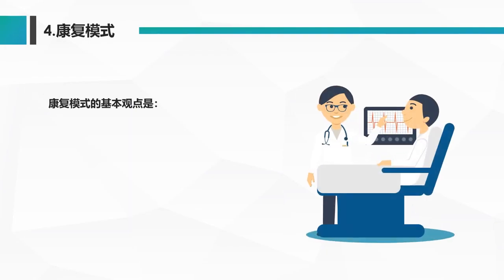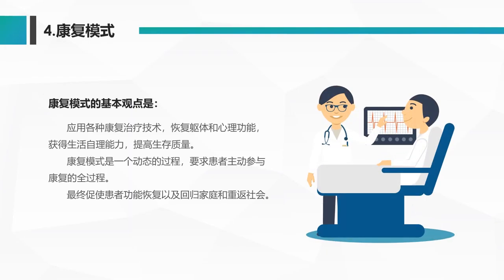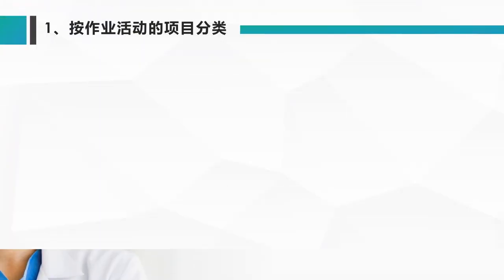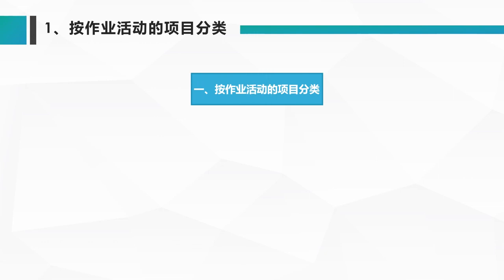第四种，康复模式：基本观点是通过各种康复治疗技术，恢复躯体和心理的功能，获得生活自理能力和提高生存质量。康复模式整个过程是一个动态的过程，要求患者配合康复医生的治疗，并主动参与康复的全过程，最终促使患者功能恢复，回归家庭、重返社会。